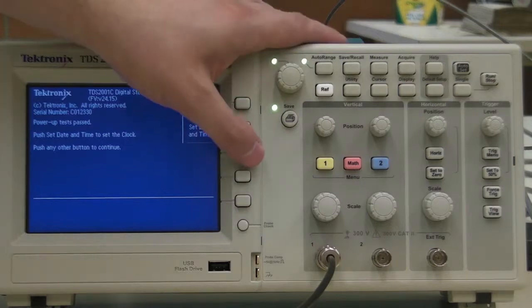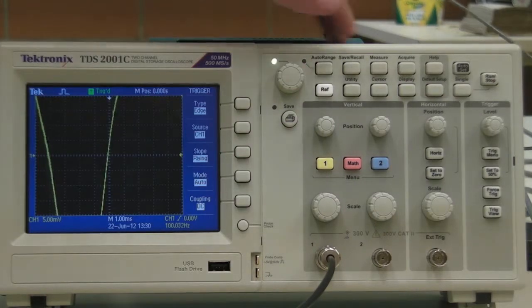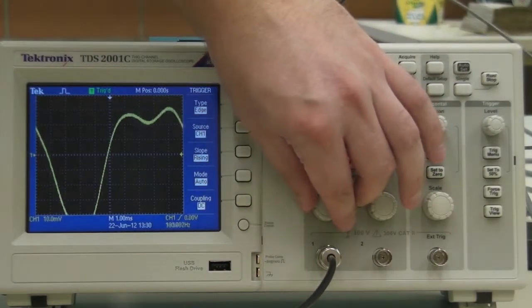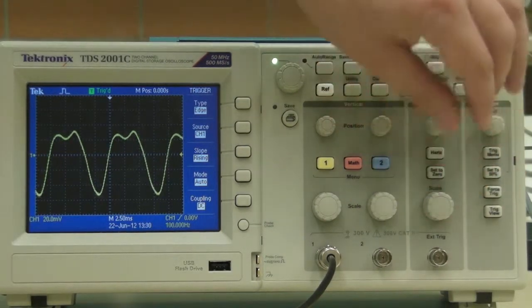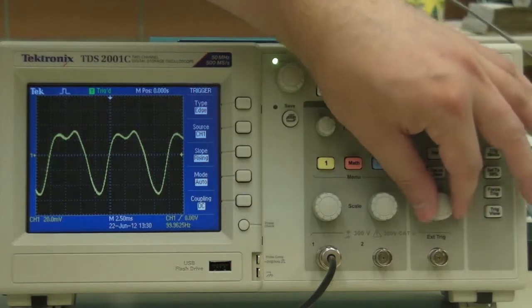When the oscilloscope starts, you'll need to press any key to get into the main interface. The signal may be off scale to start, so use the vertical scale to pull it down, and also adjust the horizontal scale so that you can see several copies of the wave.